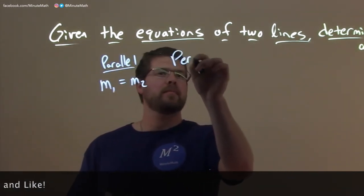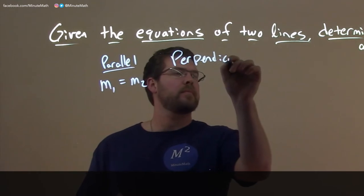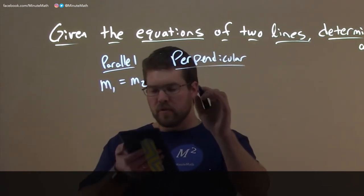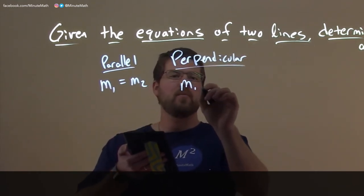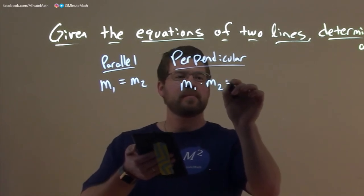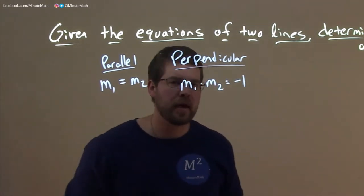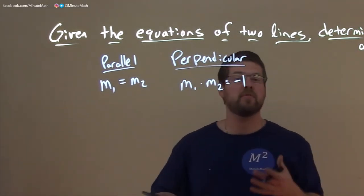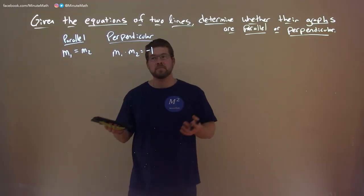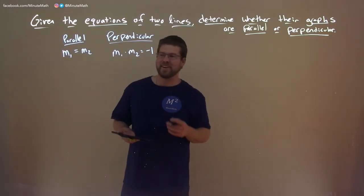If they're perpendicular, the slopes when multiplied together, m1 times m2, is going to be a negative 1. And that's something you've also heard as maybe opposite reciprocal for the slopes. And if it's neither, it's neither one of those.